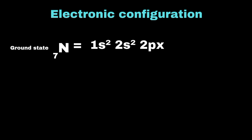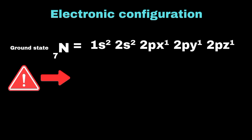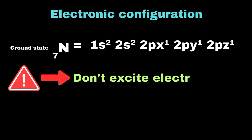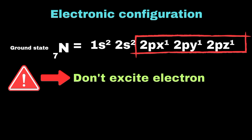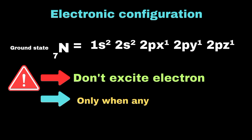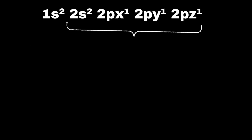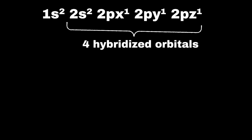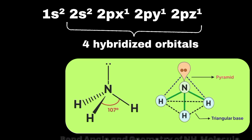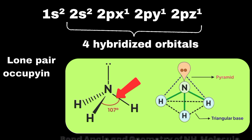Looking at the electronic configuration of nitrogen, it has one electron each in two p orbitals. In this case, there is no need to excite an electron from the 2s orbital to the p orbital, because the already present electrons will repel incoming electrons. We only need to excite electrons when a 2p orbital is empty. So in ammonia, 1s and 3p orbitals will overlap to form four sp3 hybridized orbitals. The shape of ammonia is trigonal pyramidal, and the bond angle is less than 109.5 degrees because the lone pair occupies more space than the bond pairs, causing the overall bond angle to shrink.